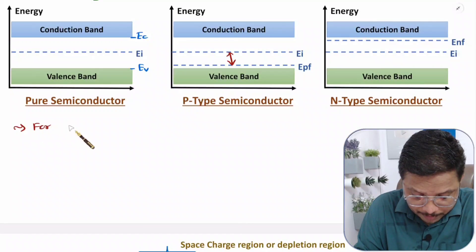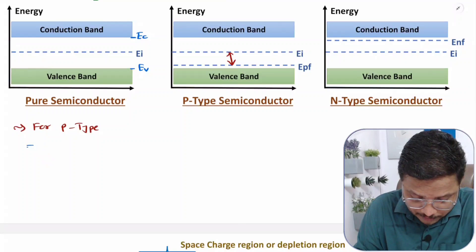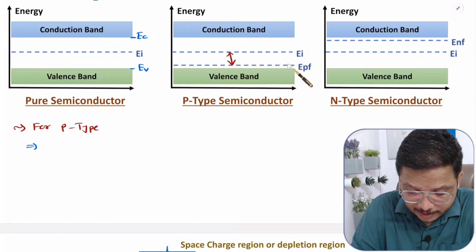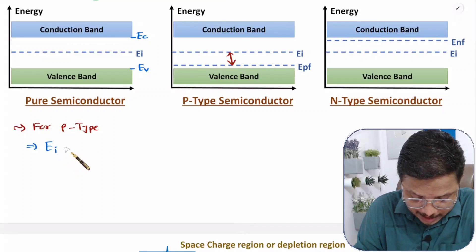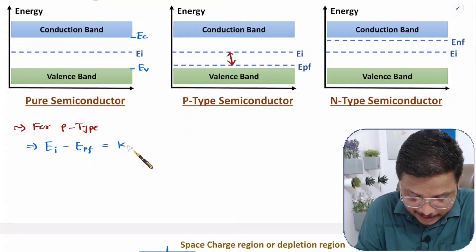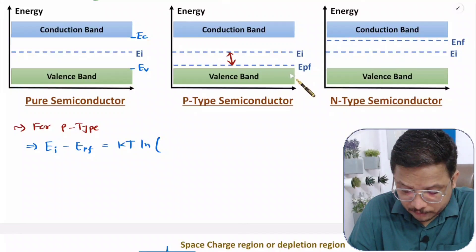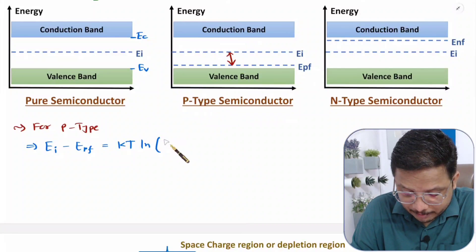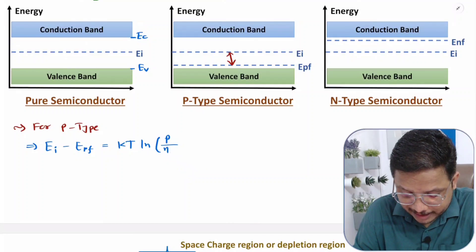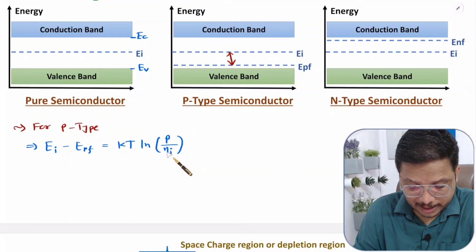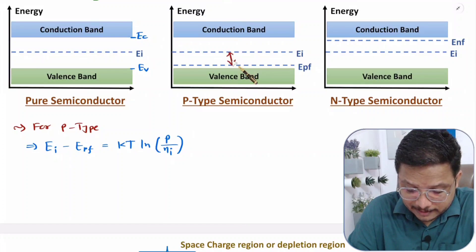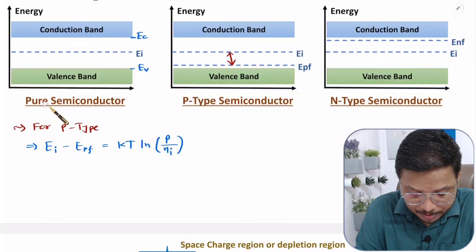For P-type semiconductor, we are having energy shifting. And that will be EI minus EPF, which equals KT into ln of P divided by Ni, where P is the concentration of trivalent impurities added and Ni is the intrinsic concentration. So that is EI minus EPF.